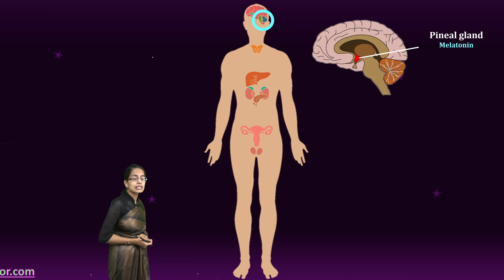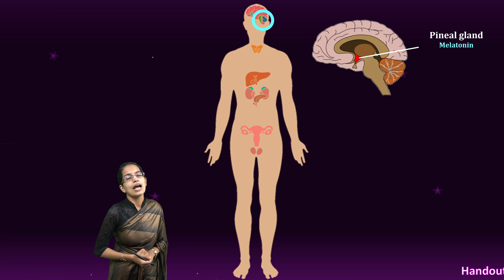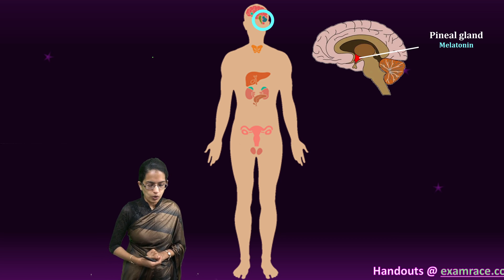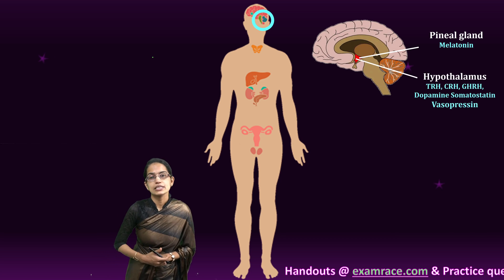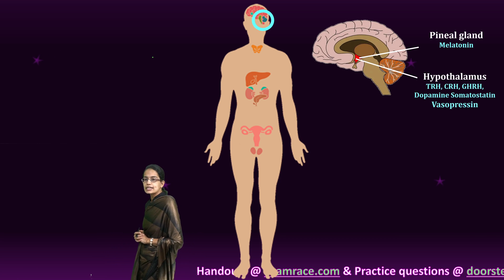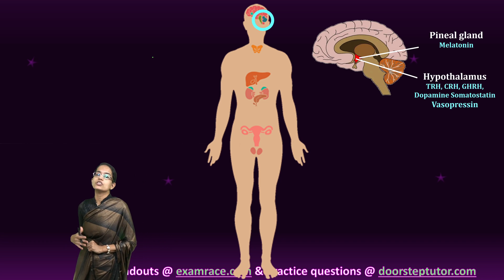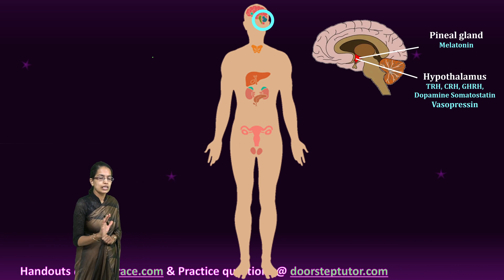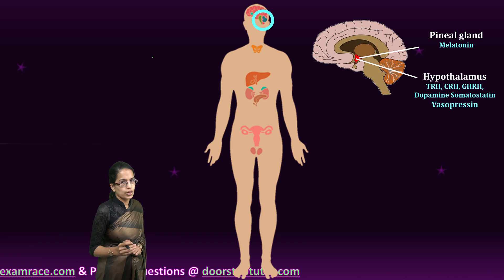First, the less commonly heard pineal gland, which releases melatonin. So melatonin is the major secretion from the pineal gland. We would talk about each of these glands individually in detail — just an introduction here.